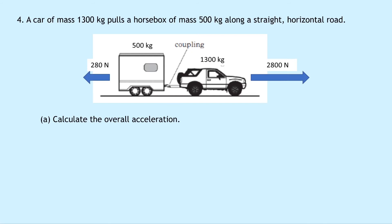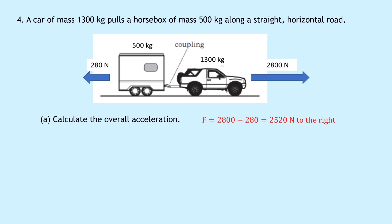Question four is similar to question three. A car of mass 1,300 kilograms pulls a horse box of mass 500 kilograms along a straight horizontal road. We have a forward force of 2,800 Newtons and a friction force of 280 Newtons. This is another connected system. We first work out the unbalanced force: F equals 2,800 minus 280, which is 2,520 Newtons to the right. So the acceleration of the system must also be to the right.